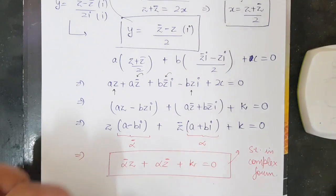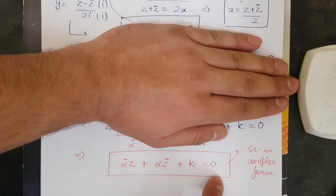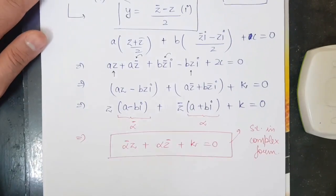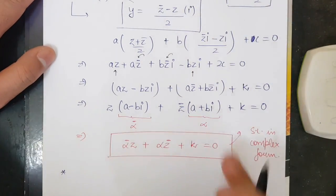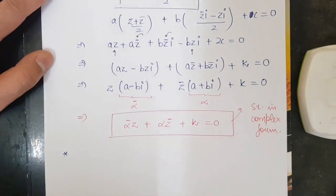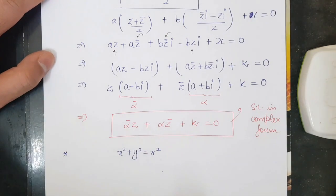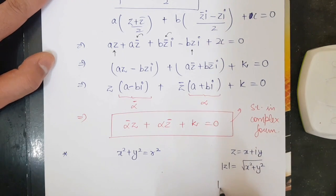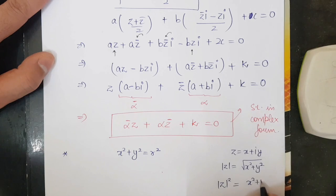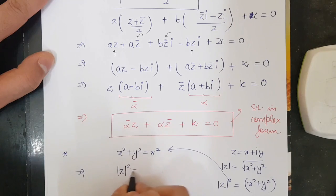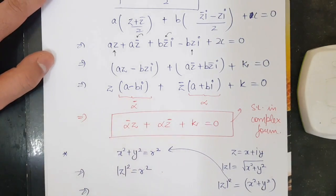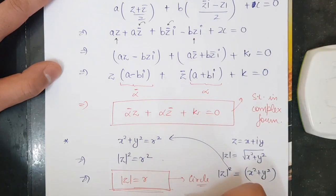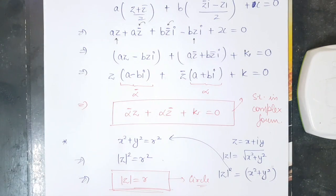This derivation shows you exactly how the equation of a straight line arises in complex form, rather than just cramming the result. Similarly, you can derive equations for parabola, circle, ellipse, and hyperbola by substituting the values of x and y. For example, the circle x² + y² = r² becomes |z|² = r², i.e., |z| = r, which is the equation of the circle in complex form.